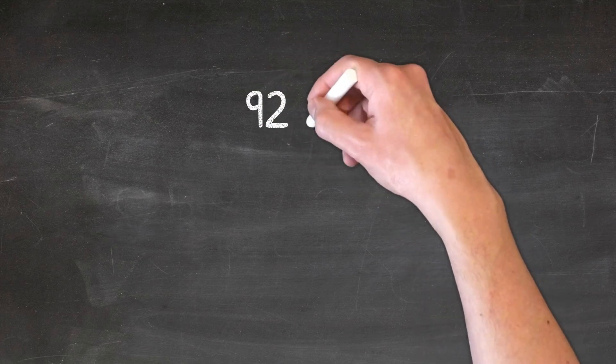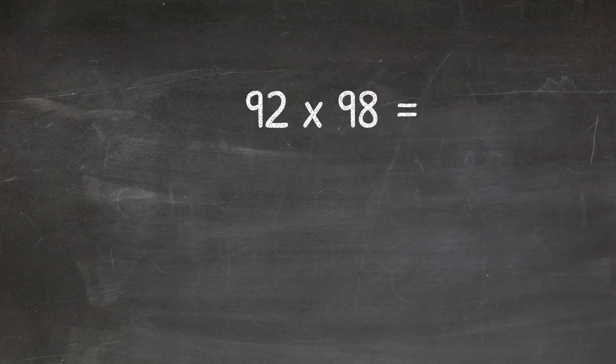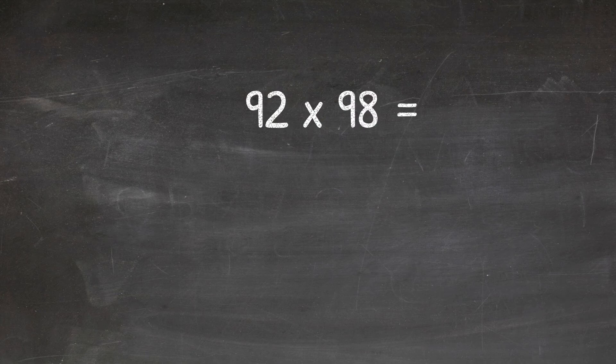Let's say we want to multiply two large numbers that are less than 100. Here's how we do it without using a calculator. So let's pick two random numbers. Let's go for 92 and 98. We want to times these two numbers together.